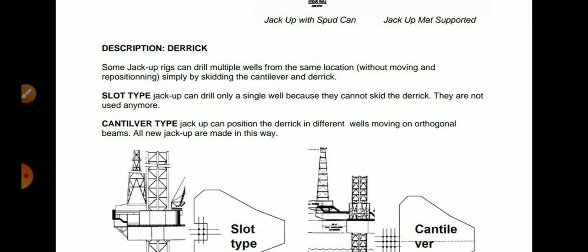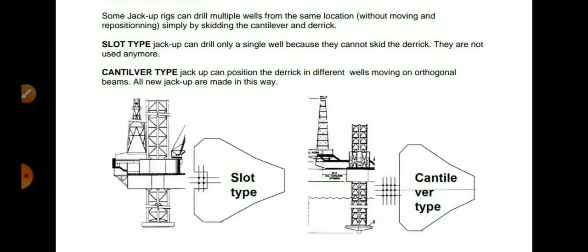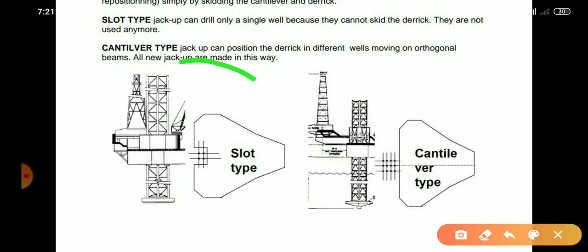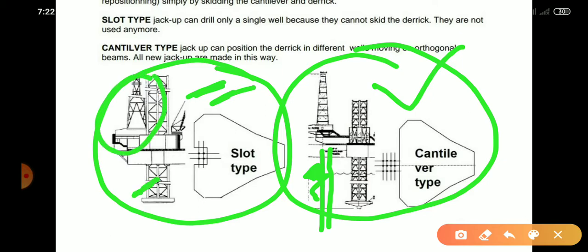The cantilever type jackup can position the derrick over different wells by moving on orthogonal beams. All new jackups are made in this way. In the conventional slot type there is no chance for repositioning the derrick, but with the cantilever type there is a chance of positioning the derrick over different wells — that is the advantage for drilling multiple wells. In a single position without changing the rig location you can drill more holes. With the slot type you can only produce one well and then you have to move to a new location.